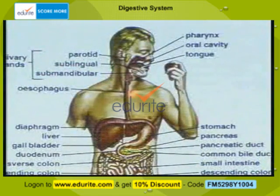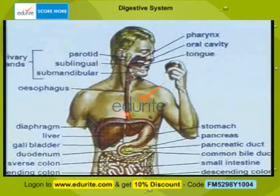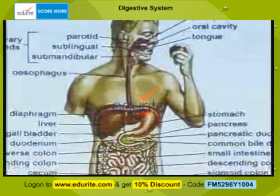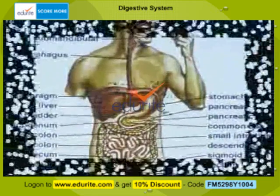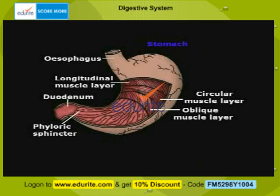The esophagus is 25 centimeters in length, and at the point of joining the stomach there is a cardiac sphincter which aids the passage of food into the stomach. In the stomach, the food is subjected to the action of yet another juice — the gastric juice secreted by the gastric glands.